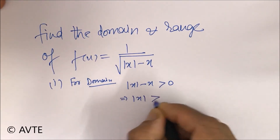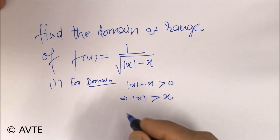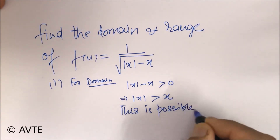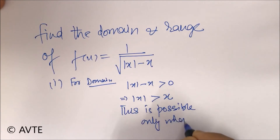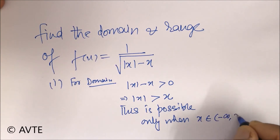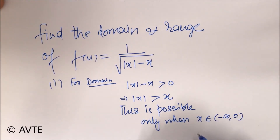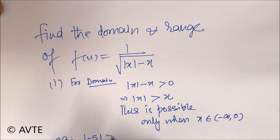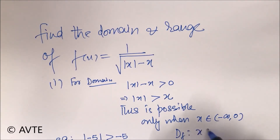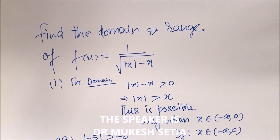Now shift x to the other side — this is possible only when x belongs to minus infinity to 0. That is, x is a negative quantity, because the mod of any negative quantity — for example, if I put minus 5, mod of minus 5 will be greater than minus 5 — so it is true for all negative values. So the domain is minus infinity to 0.